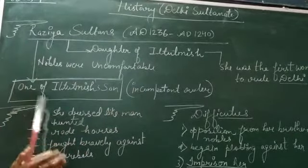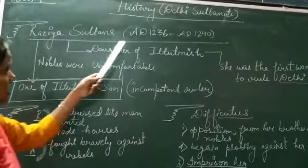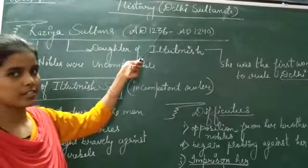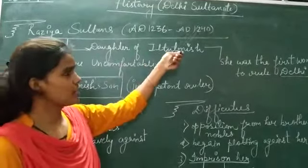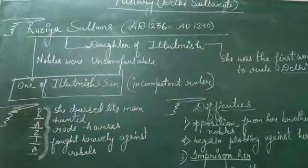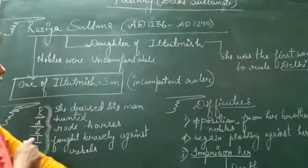If we talk about the duration, the time period of Razia Sultan, that was from AD 1236 to AD 1240. She ruled around 4 years.